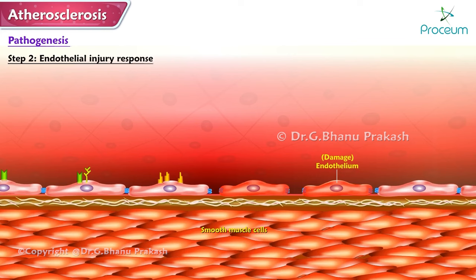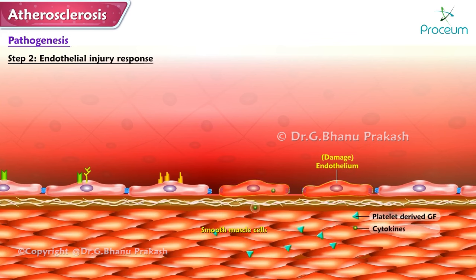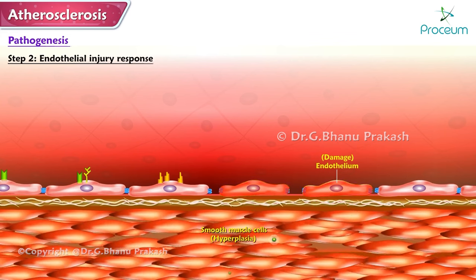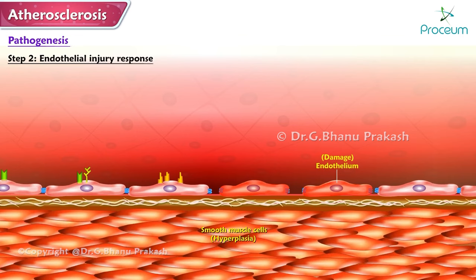Step 2 — Endothelial Injury Response: endothelial injury initiates an inflammatory reaction with release of cytokines and growth factors, especially platelet-derived growth factor (PDGF), which causes hyperplasia of smooth muscle cells.